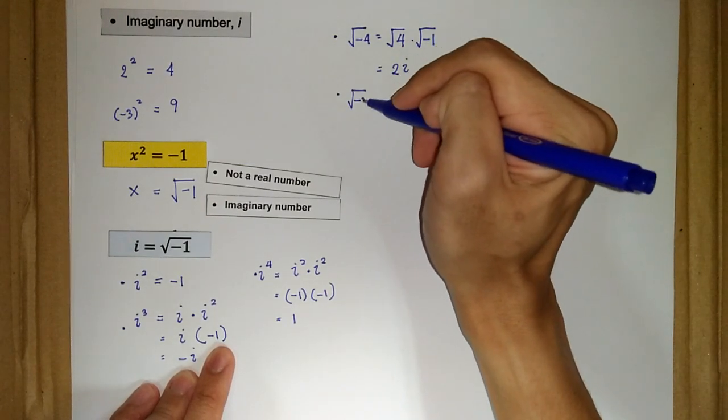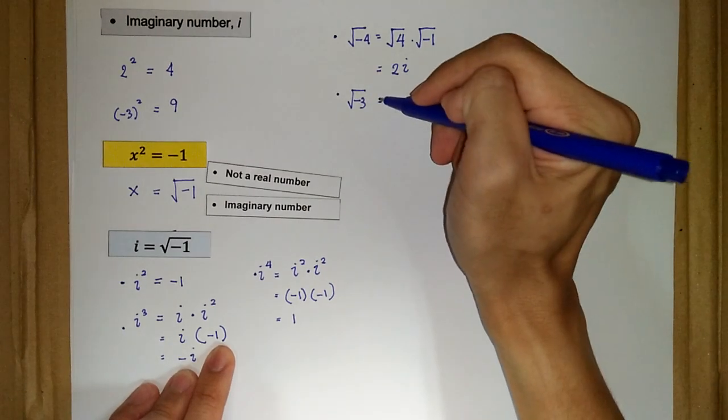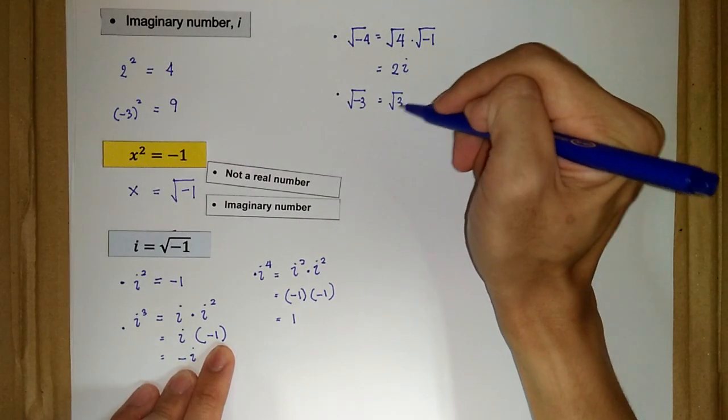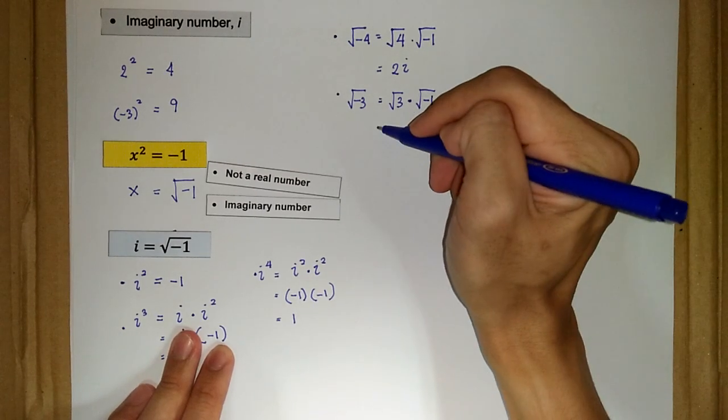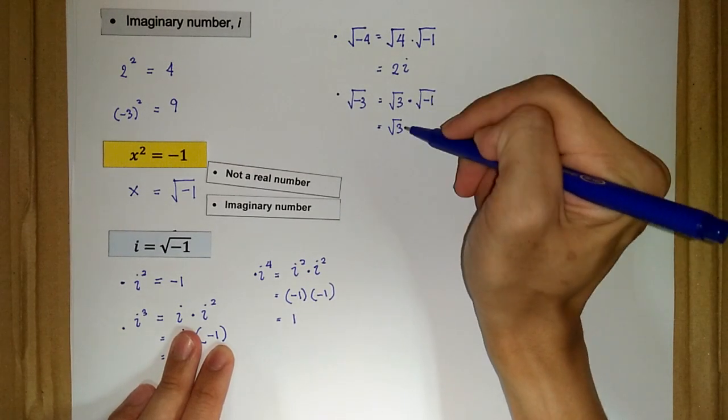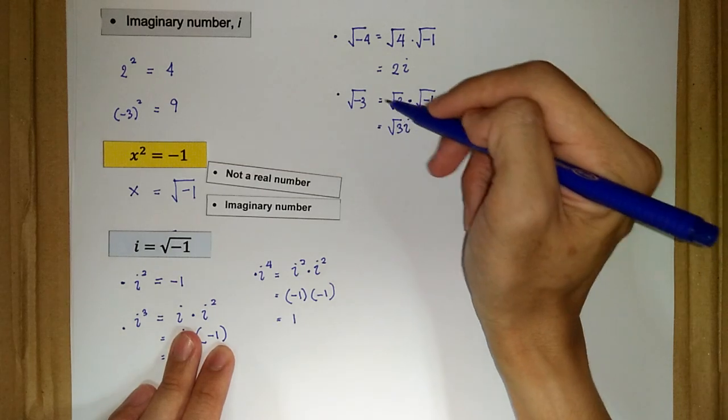We also have the square root of negative 3. This is the square root of 3 times the square root of negative 1, which gives us √3i.